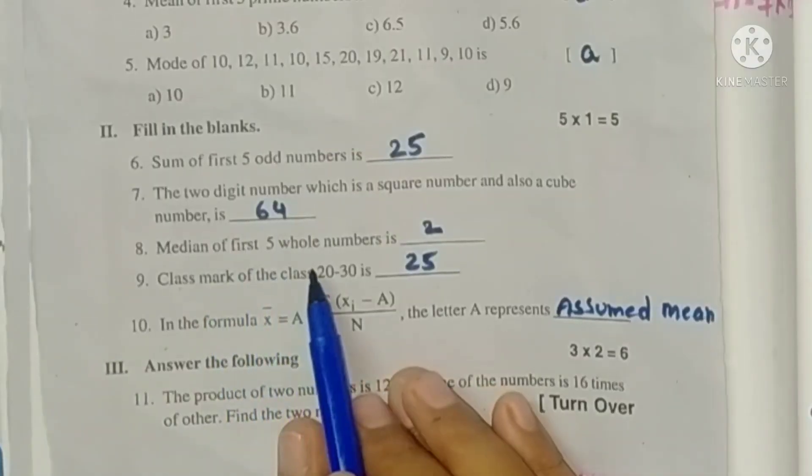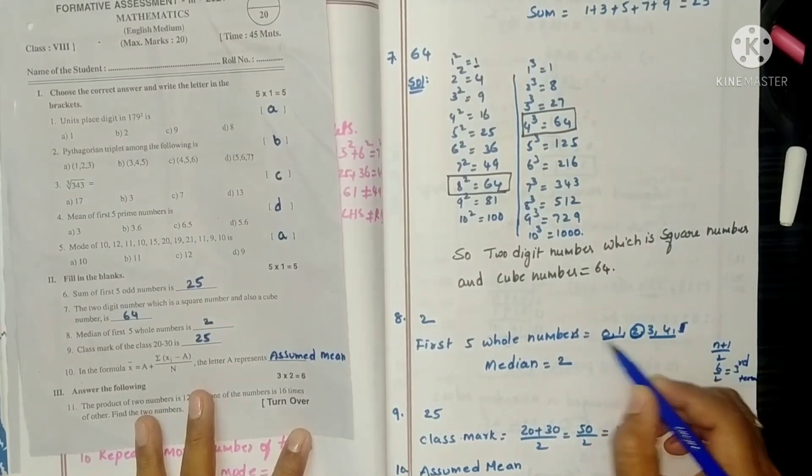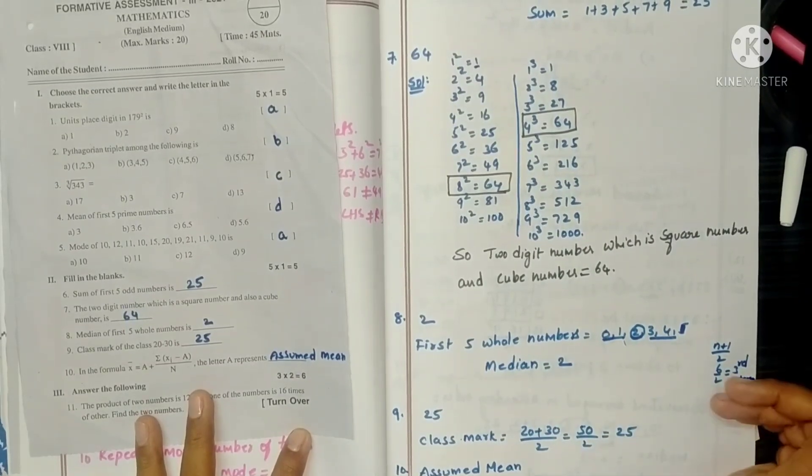Next, median of first 5 whole numbers is. First 5 whole numbers, write them. This side 2 and this side 2. So middle one is the median, which is 2.